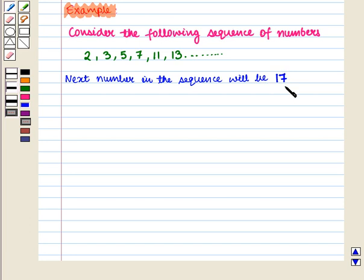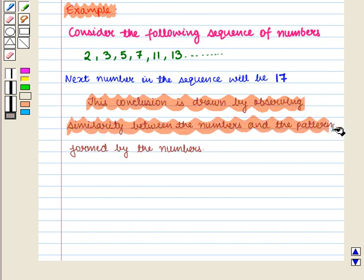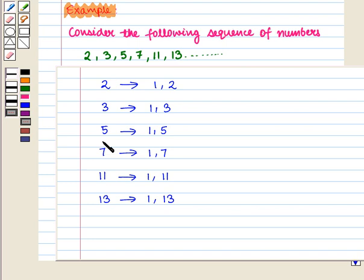But how did we arrive at this conclusion? This conclusion is drawn by observing similarity between the numbers and the pattern formed by the numbers. We see that all these numbers do not have any positive divisor except one and itself. So we say that all these numbers are prime numbers.